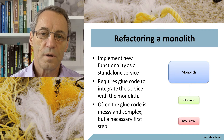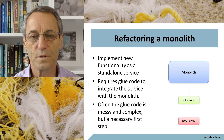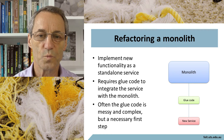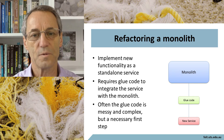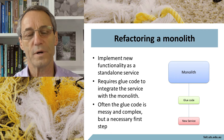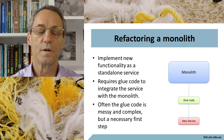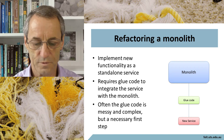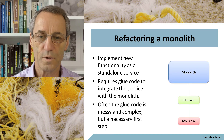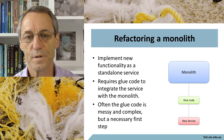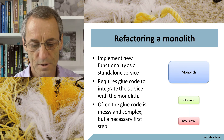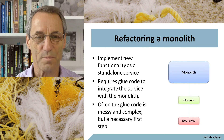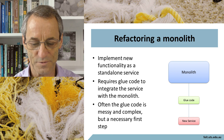To take a monolith and refactor it, if you can't introduce a new microservice you're going to have to start taking part of the functionality out of the monolith and creating a microservice. One approach is to create the microservice and put in some glue code between the microservice and the monolith. This is just an interim step, but the glue code is messy, complex, and just plain ugly — it's a necessary first step, though.